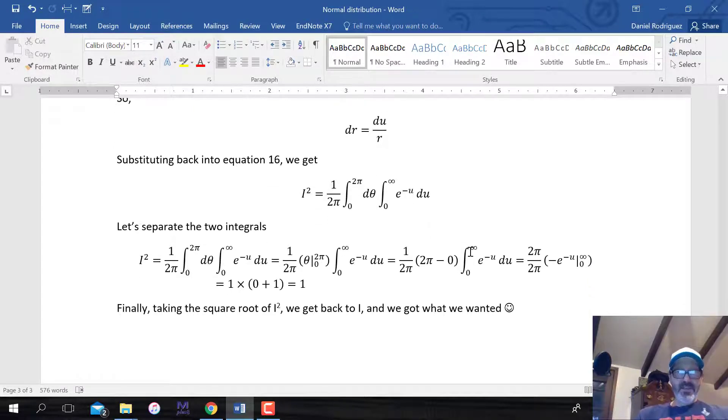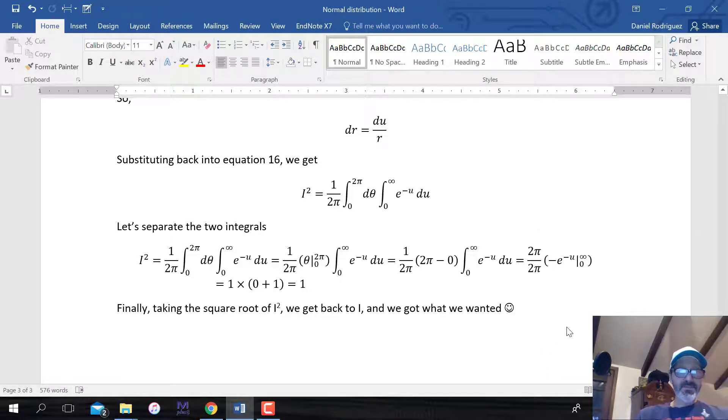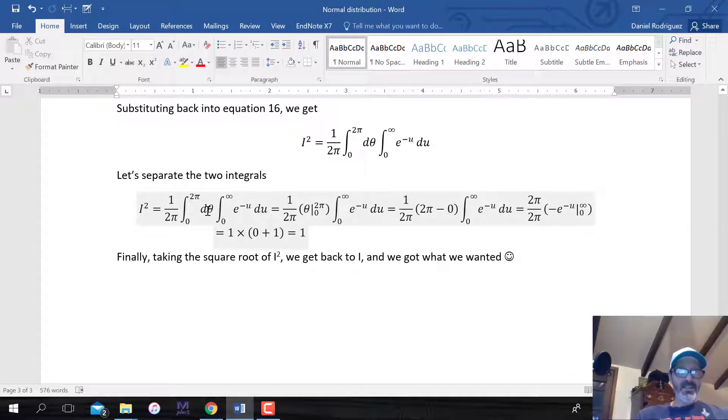We just have to solve for these individual integrals. This first part is just theta. There's no term here. This is just one, and its antiderivative is theta. So theta, and we're solving it from 2 pi to zero. This is regular calculus stuff. And then we have this integral left here. This is just going to equal 2 pi.